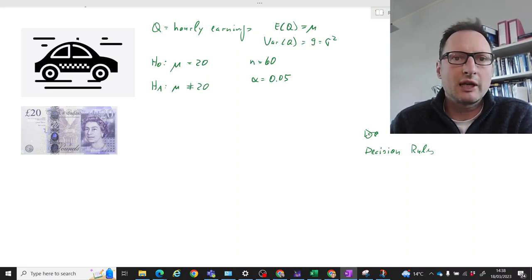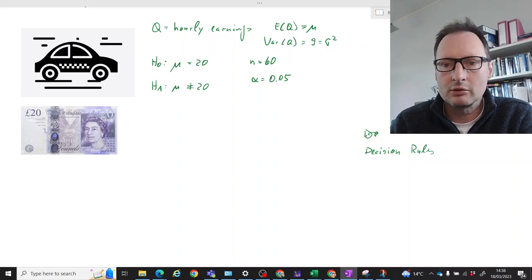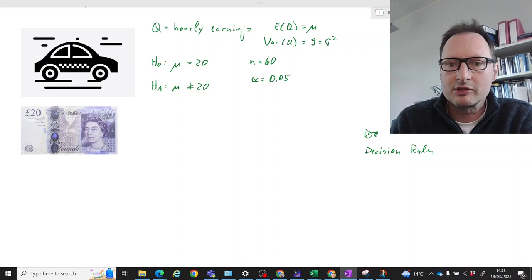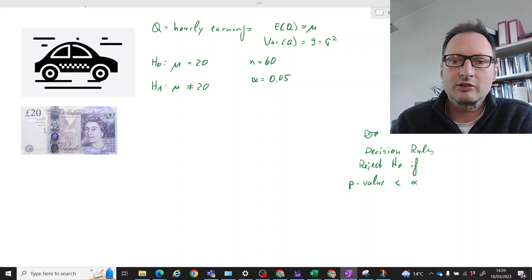The decision rule you can immediately write down is that relating to p-value. You can say reject H0 if - and now the first decision rule is that p-value is smaller than alpha. That's the first decision rule. And then we will have two more decision rules.